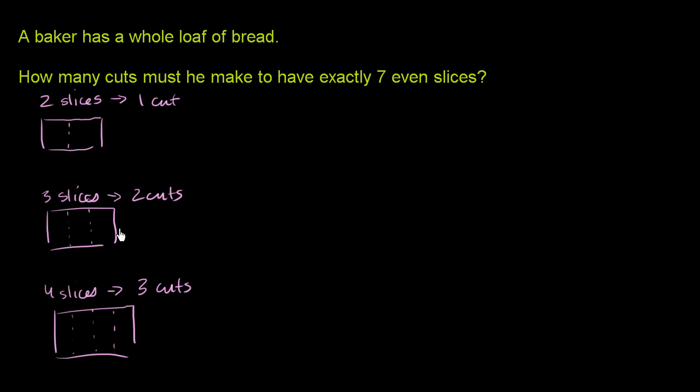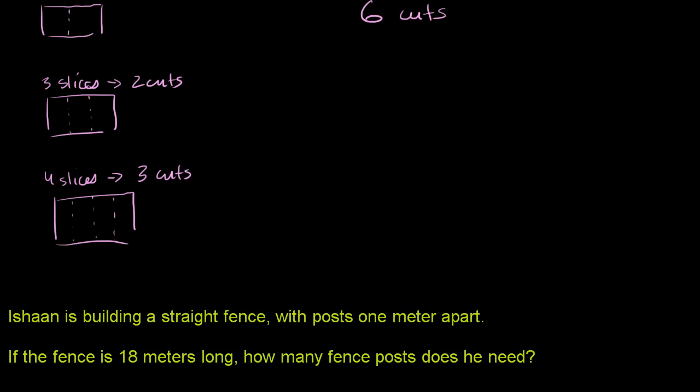You could go all the way to seven, but you see the pattern. However many slices you want, you only need to do that many slices minus one cuts. So for seven even slices, you only have to do six cuts. And you see why—you don't have to cut out that very last piece. It just falls off the edge. Let's do one more of these.